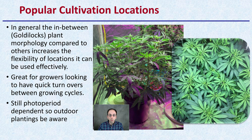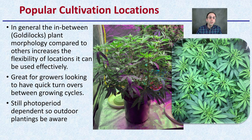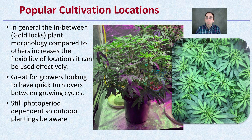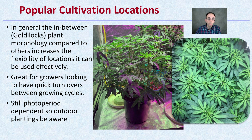Popular cultivation locations for indicas — in general, they have what's called a Goldilocks plant morphology compared to others, which increases the flexibility of locations they can be used effectively in. They're great for growers looking for quick turnovers between growing cycles, but they don't get quite as tall or take up the area that sativas would.